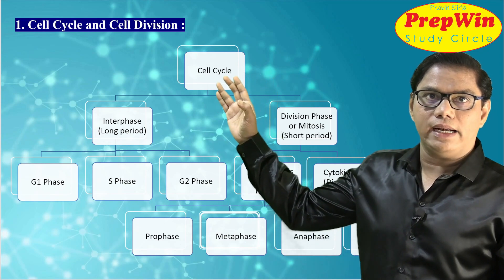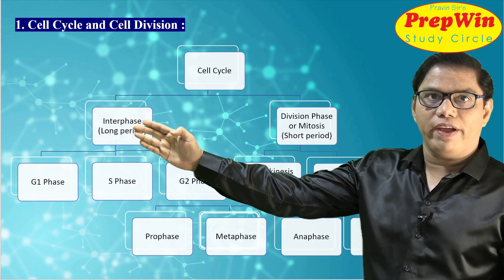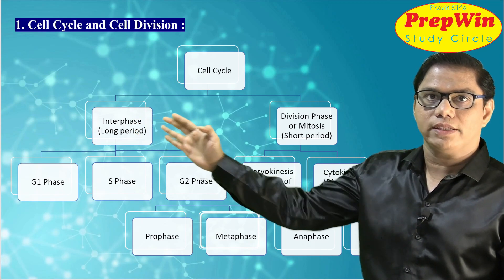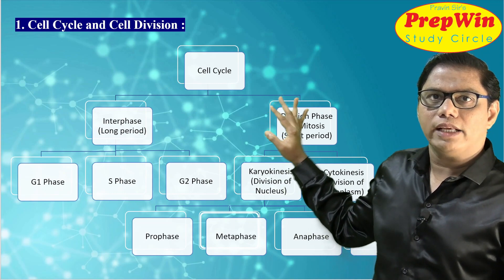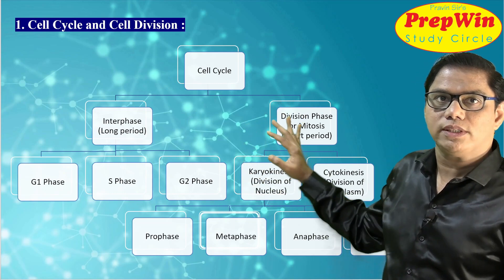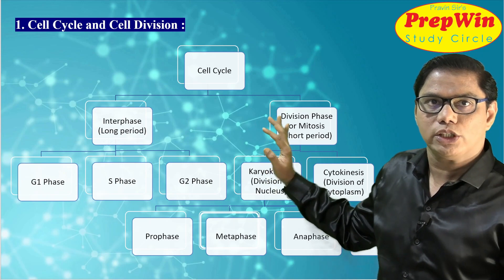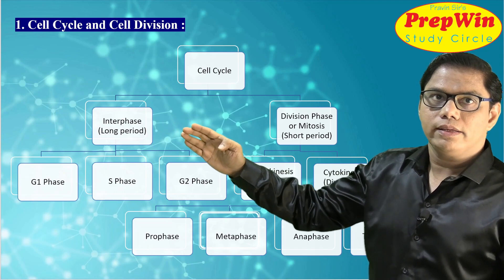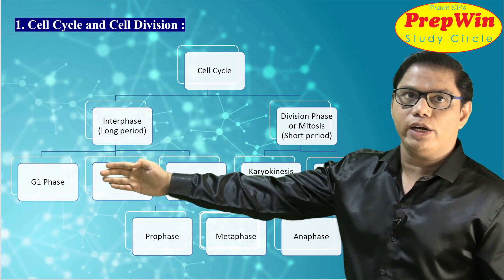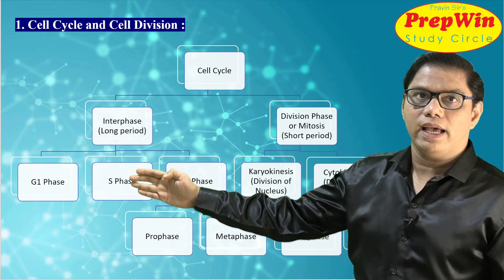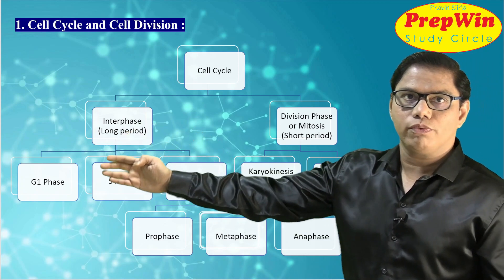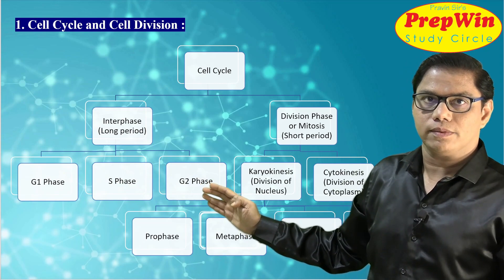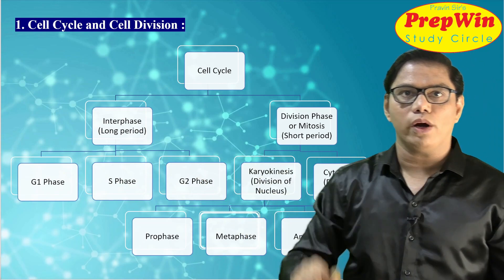Cell cycle can be divided into two phases: one is the interphase — the longer phase — and the other is mitosis. Let us concentrate on the interphase. Interphase can be divided into three phases: G1 phase, S phase, and G2 phase — meaning first growth phase, synthesis phase, and second growth phase.